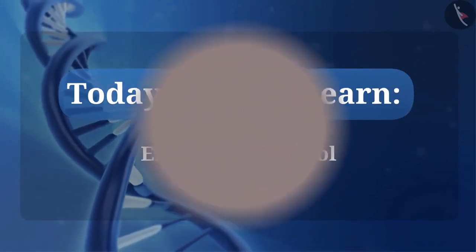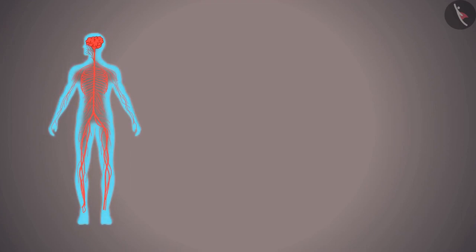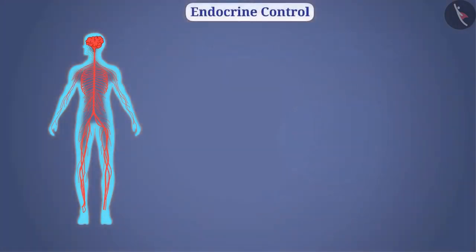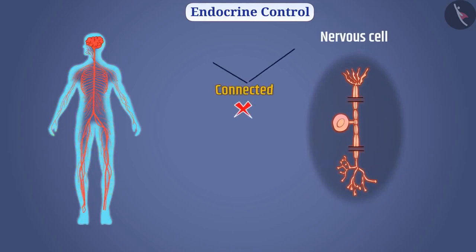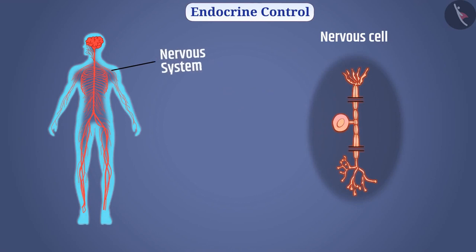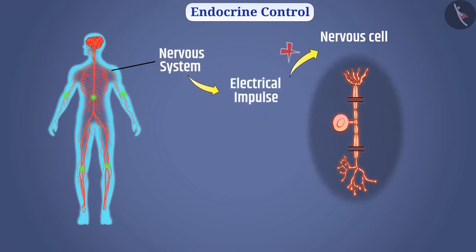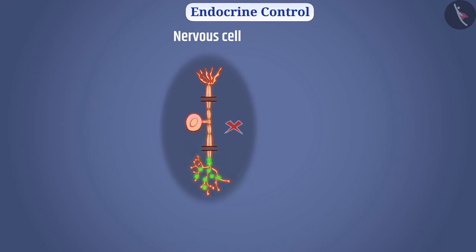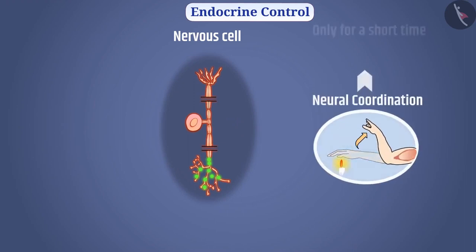This video is about endocrine control. In the previous video, we learned that nervous control coordinates various functions in our body. But not every cell in our body is connected to the nervous system, so the nervous system cannot carry electrical impulses to all cells of the body. Additionally, cells do not generate and communicate electrical impulses continuously, and neural coordination is fast but only for a short time.